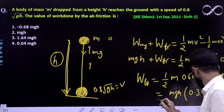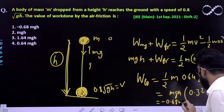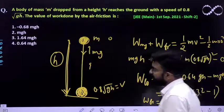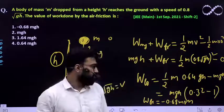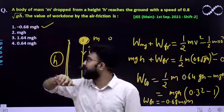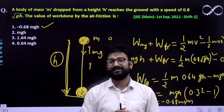So it would be equal to minus 0.68 m into g into h. So this is the value of work done by friction that we are getting. So finally the answer would be your first answer, that is minus 0.68 mgh. So I hope this question is clear to everyone. Thank you.